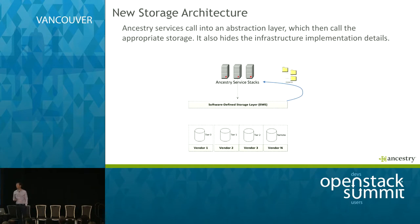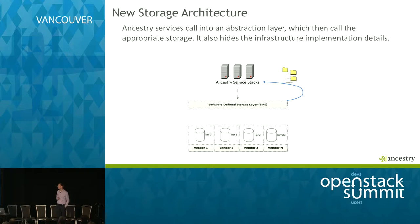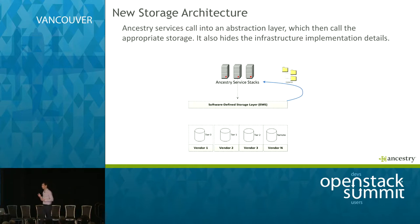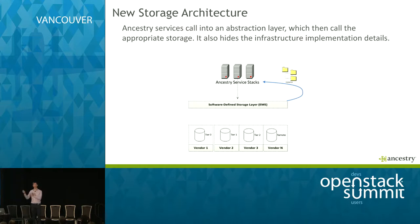They knew they needed a change. The way they executed it — and we'll hear something similar from DreamWorks — is they built a middleware service layer between the storage system and the application tier. This meant they could swap out the underlying storage and do a migration over time. That was their strategy to get to object storage.